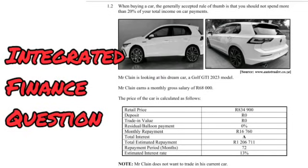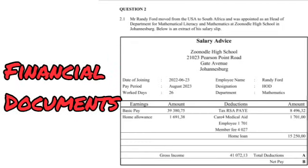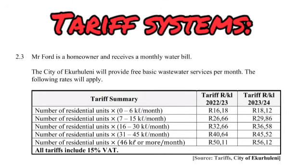The second type of finance question is financial documents. In your coming examination, there will definitely be financial documents — probably in the addendum. Make sure you are able to interpret your financial documents properly. Don't take this type of question for granted; take every question seriously. Study your financial documents. The third type of financial question is tariff systems.